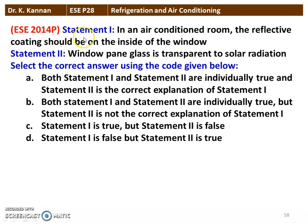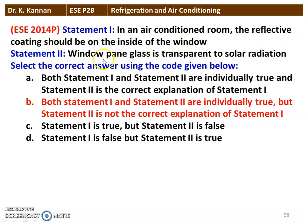Next question. There are two statements. Statement 1: in an air-conditioned room, the reflective coating should be on the inside of the window. Statement 2: window pane glass is transparent to solar radiation. Both statements 1 and 2 are true, but statement 2 is not the correct explanation for statement 1. The reflective coating should be inside the window, and the window pane glass is transparent to solar radiation.